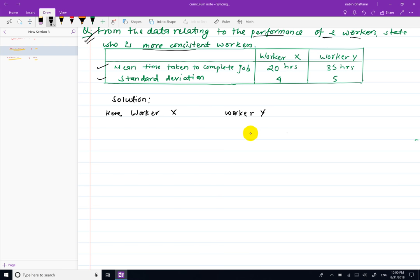Worker X: mean time X-bar equals 20 hours, sigma 1 equals 4. Worker Y: X2-bar equals 35 hours, sigma 2 equals 5.